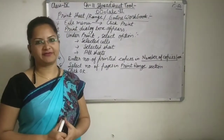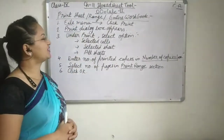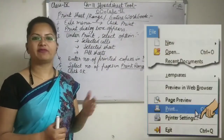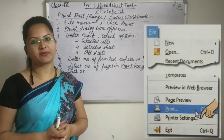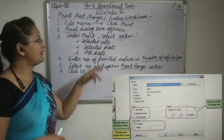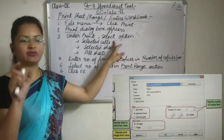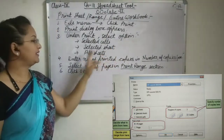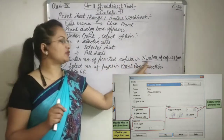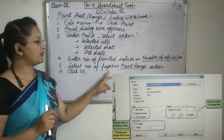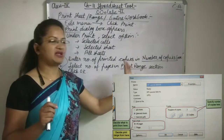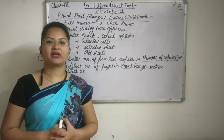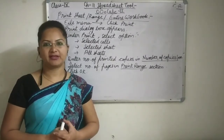Now students, this is the last topic of this chapter. Here we will learn to print the sheet range or entire workbook. It's very easy to print the document — simply click on File in the menu bar and choose print option. The print dialog box will appear. In print, you will get three options: print selected cells, print selected sheet, or choose any one option. Then enter the number of copies in the number of copies box, write the number of pages in the print range section, and then click OK. Thank you. Have a nice day.